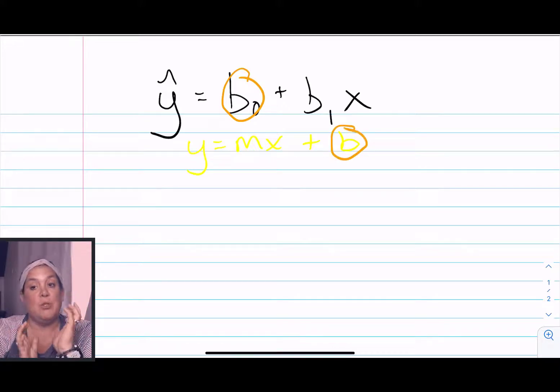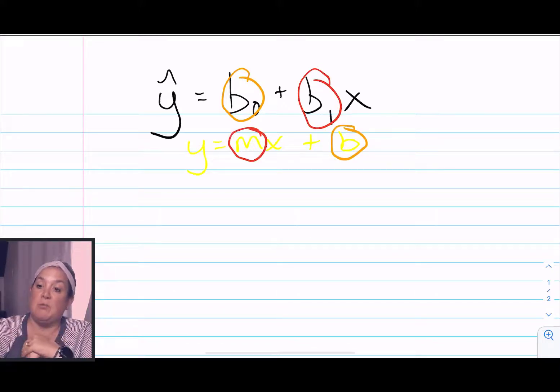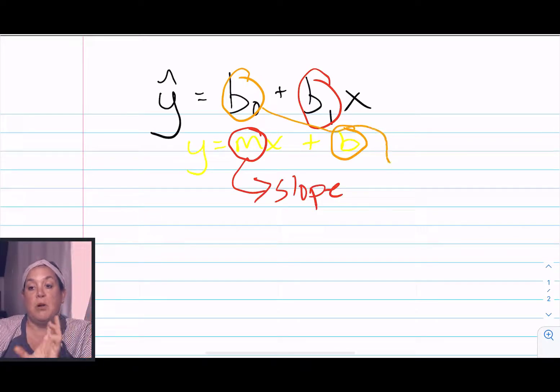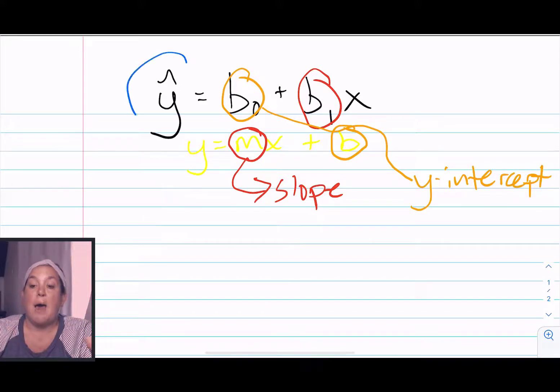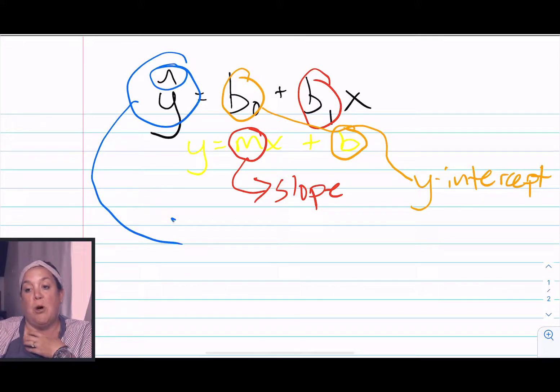So remember the notation we use is a little different than it was when you were in algebra. You had y equals mx plus b, but we use y hat equals b sub zero plus b sub one x. So the b sub one is the slope, that's what's multiplied by x, and then b sub zero is going to be the y intercept, which you're maybe used to as being denoted with a b.